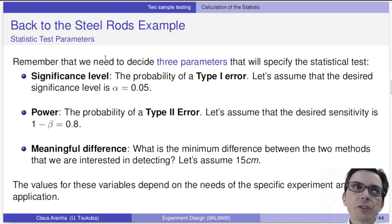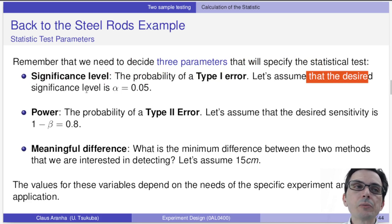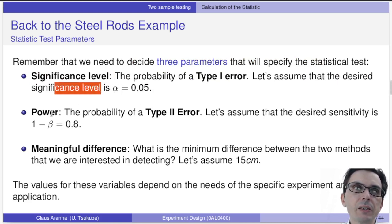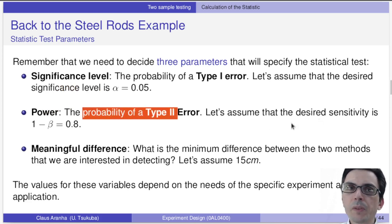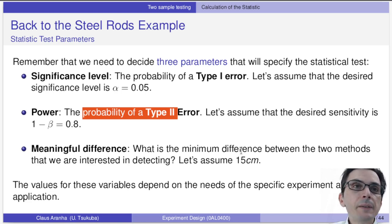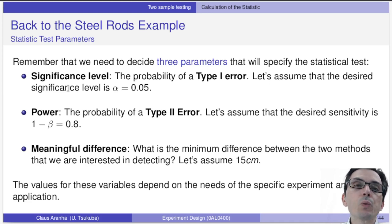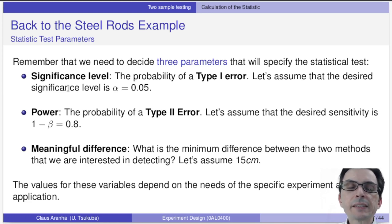As we discussed in the last lecture, we need to decide three parameters for the statistical test. First is the significance level alpha — the probability of a type one error. We assume a desired significance level of 0.05 for this experiment. Then the power — the probability of a type two error — and let's assume we want one minus beta equals 0.8, so 0.8 power. Finally, the meaningful difference: what is the minimum difference between the two methods we are interested in detecting? Let's assume we are only interested in the new method if it has at least 15 centimeters less variance than the current method. These values need to be defined based on your specific experiment — some need more precision, some need more power.